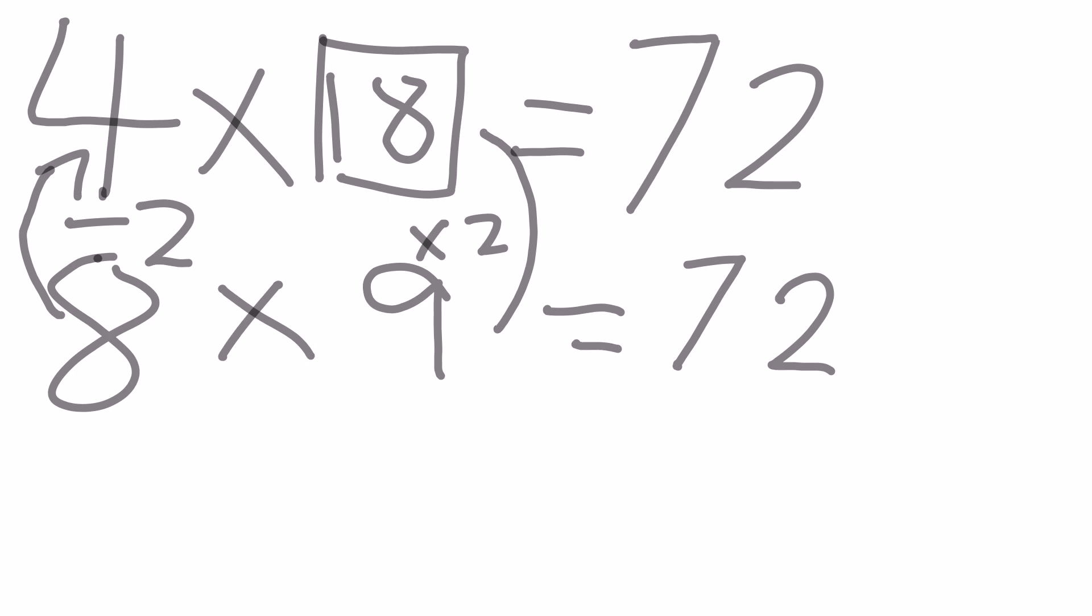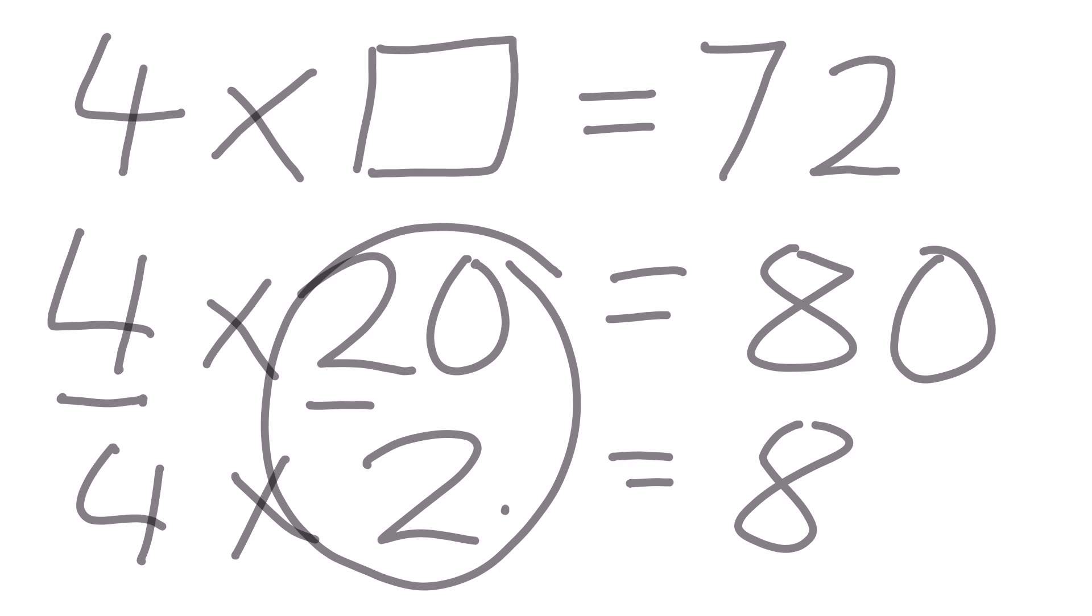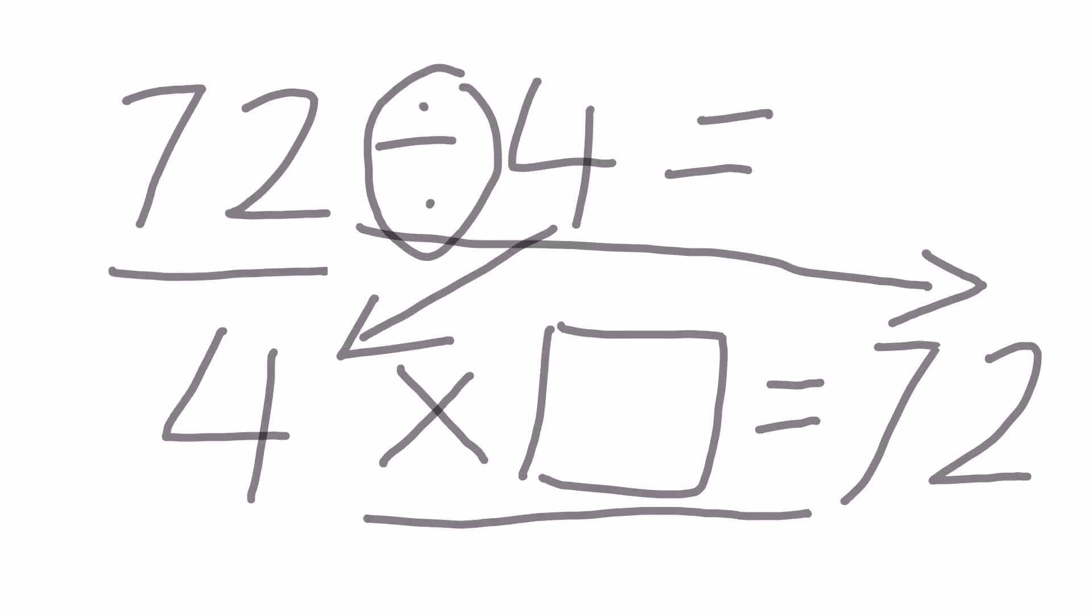And that was Stage 7 multiple strategies. You can see that we've used doubling and halving, rounding and compensating, place value partitioning, and we used reversibility to solve these problems for Stage 7. Thank you for watching.